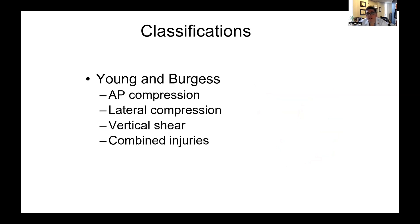Cuando hablamos de clasificar las fracturas, la clasificación más común que utilizamos es la de Young y Burgess, diseñada para describir la fuerza deformante que lesionó la pelvis. Los cuatro tipos son las lesiones por compresión AB, las lesiones por compresión lateral, las lesiones por cizallamiento vertical y las lesiones combinadas. Las lesiones combinadas pueden ser combinación de dos de ellas, o pueden implicar una fractura acetabular además del propio anillo pélvico.